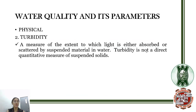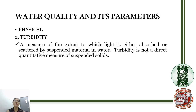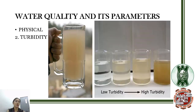The next physical water quality parameter is turbidity. Turbidity is a measure of the extent to which light is either absorbed or scattered by suspended material in water. Although turbidity is not a direct quantitative measure of suspended solids, it does not necessarily mean that turbid water has a large amount of suspended solids — turbidity may be contributed by other factors. Turbid water appears cloudy or murky, ranging from low turbidity to high turbidity.